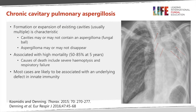Looking at chronic cavitary pulmonary aspergillosis — unlike simple aspergilloma, this is a condition where the radiological features progress with time, where there are multiple cavities, and where aspergilloma may or may not be present; one case series found aspergilloma in only around 30% of cases. Unlike simple aspergilloma, patients are almost always symptomatic. This condition is associated with high mortality — at five years, between 50% and 85% of patients with chronic pulmonary aspergillosis will have died, even with access to treatment. This is not a benign condition; it is serious, makes you very sick, and carries high mortality.